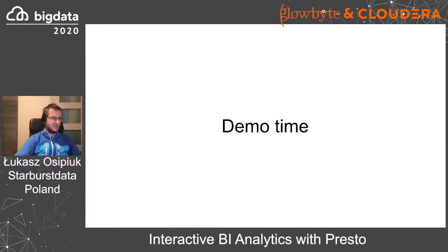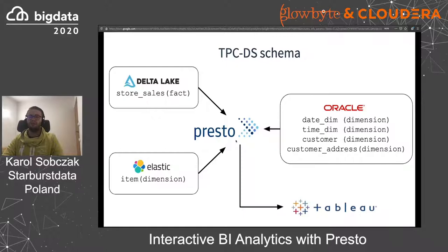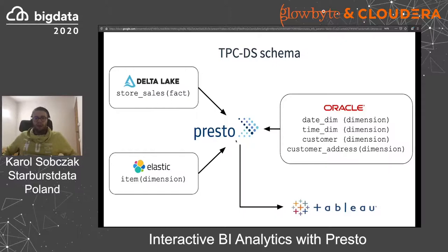Thank you very much — this is the end of the theoretical part. Now it's demo time. My name is Karol Sobczak and I am one of the co-founders of Starburst Data. In this demo, I will show you the power of Presto federation. Let's suppose there is a retail company that sells millions of items every year. Such a company might want to derive insights from sales data, but raw data is usually not very useful. In order to run analytics, one needs to join information from different data sources. In the old world, this required complex ETL processes and significant engineering effort, with data often scattered across different departments.